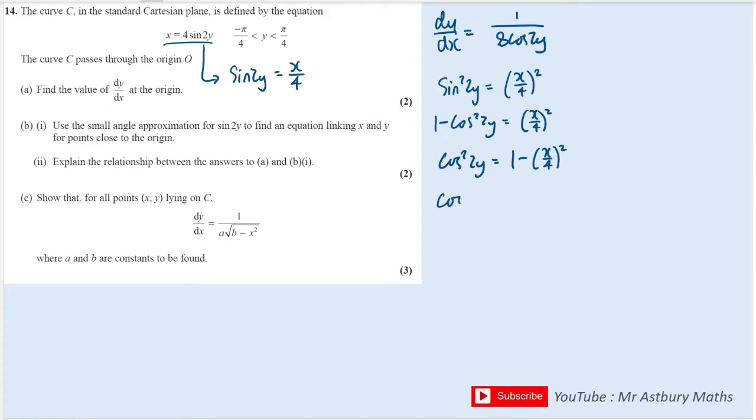And then I can square root to get my cos 2y, and that's going to be the square root of 1 minus x over 4 all squared. I can then go one step further and multiply by 8.